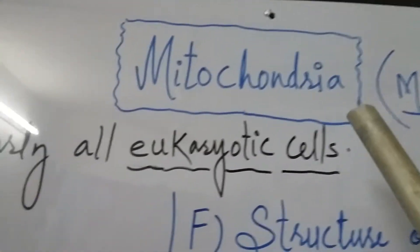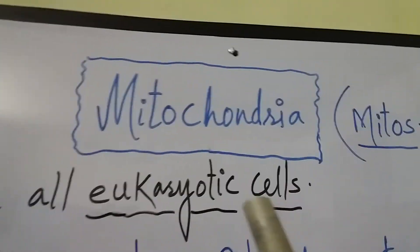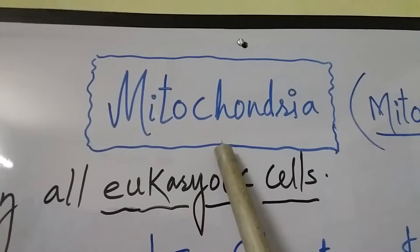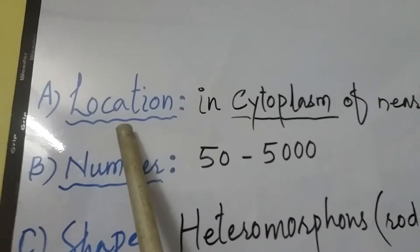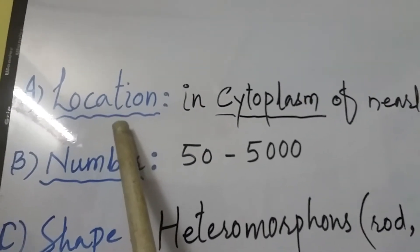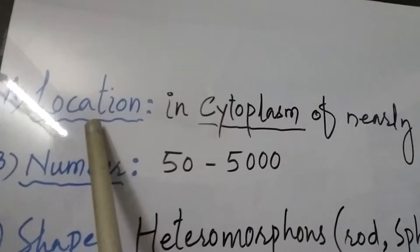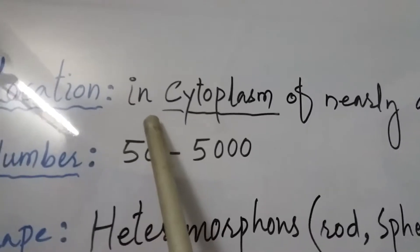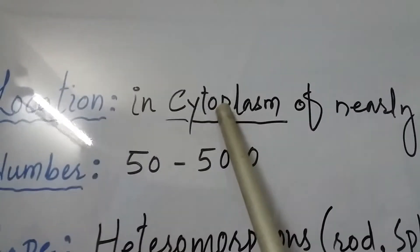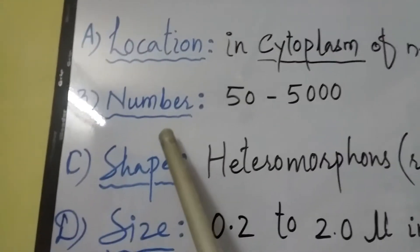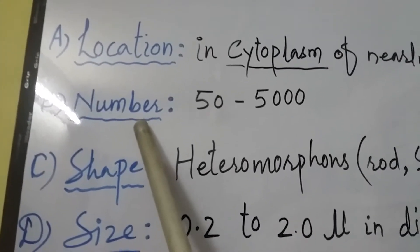Mitochondria means cell organelles. Its details are as follows. Regarding location — mitochondria is found in the cytoplasm of nearly all eukaryotic cells. All eukaryotic organisms possess mitochondria as a cell organelle in their cytoplasm.